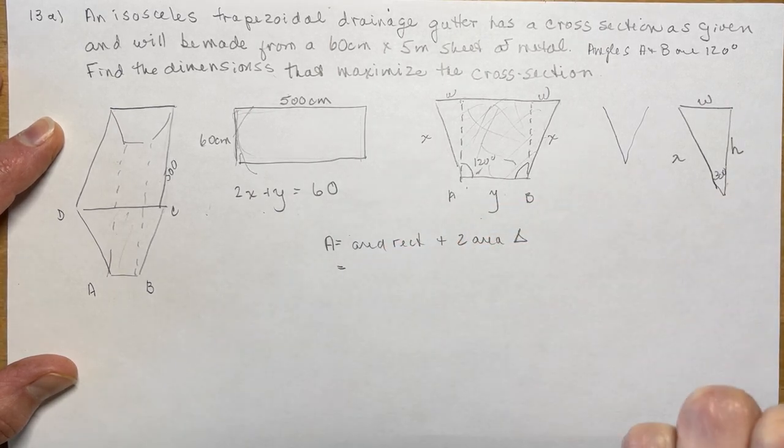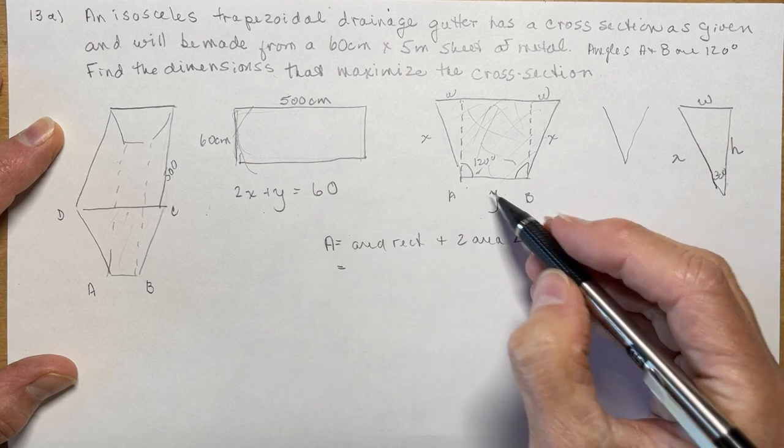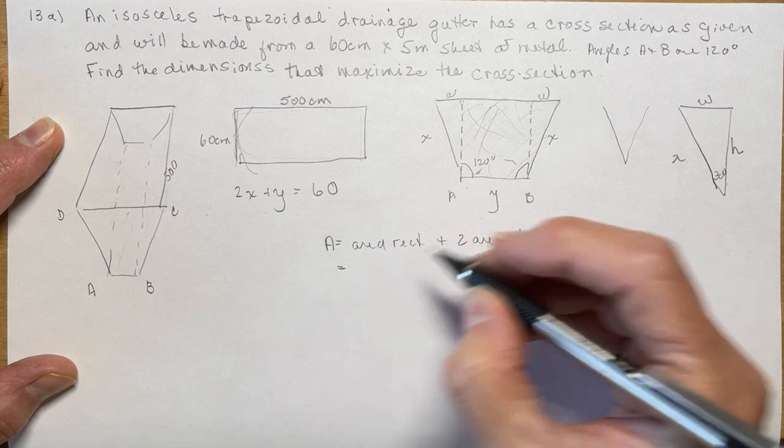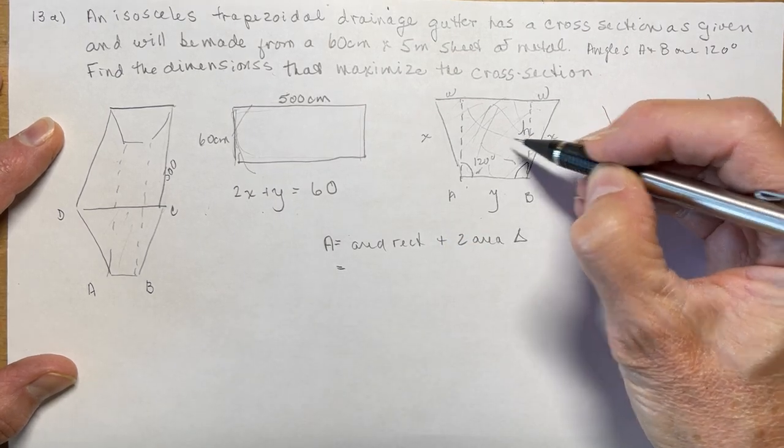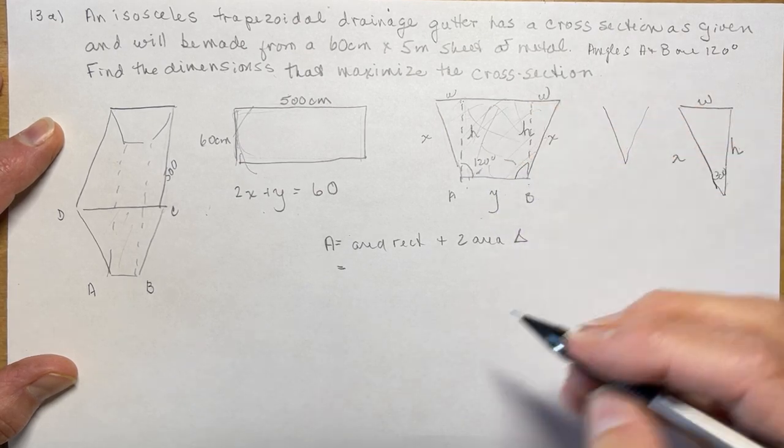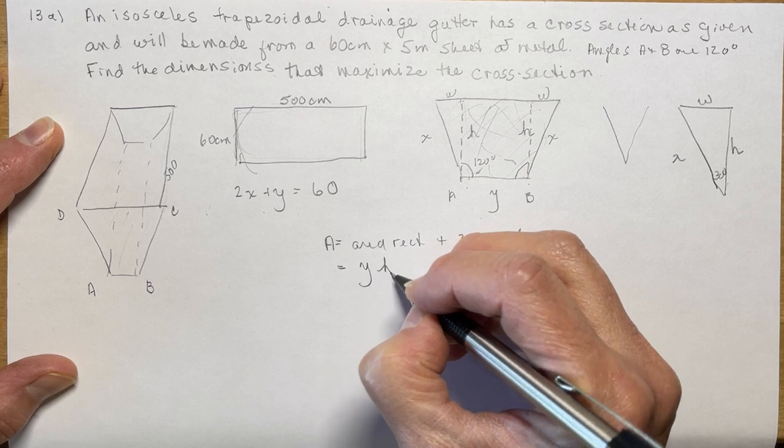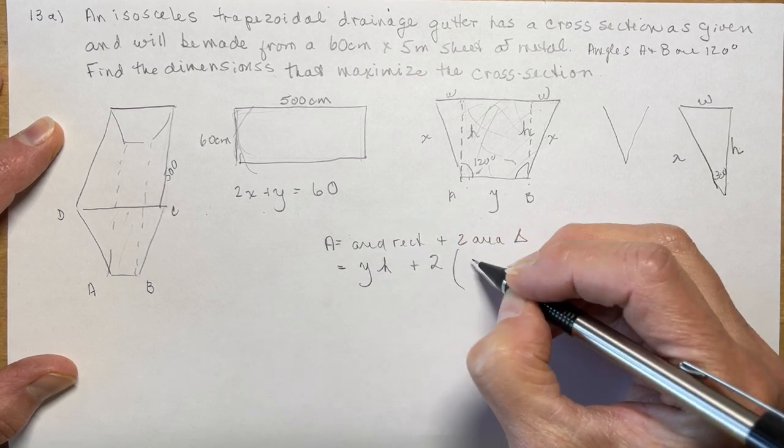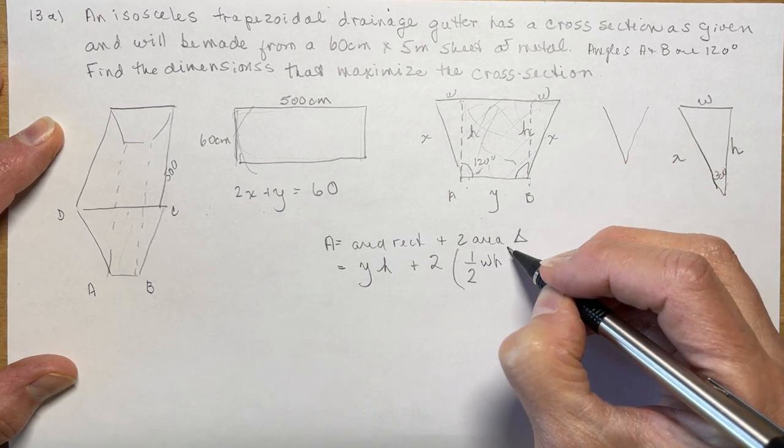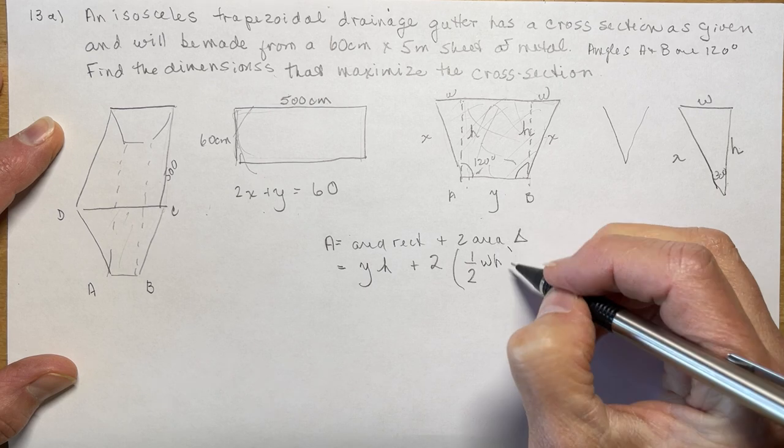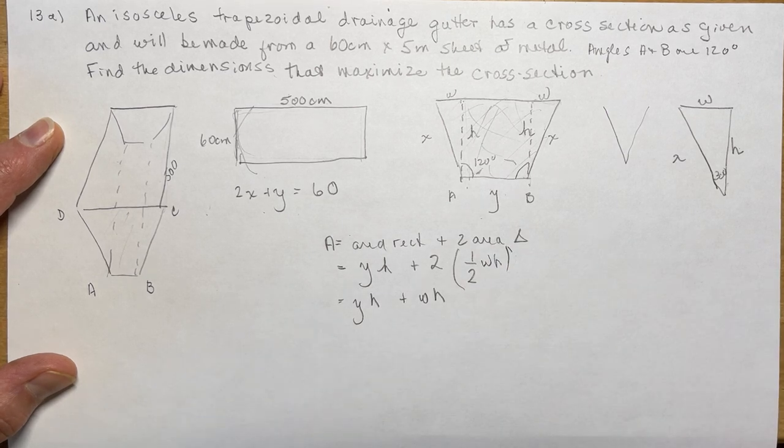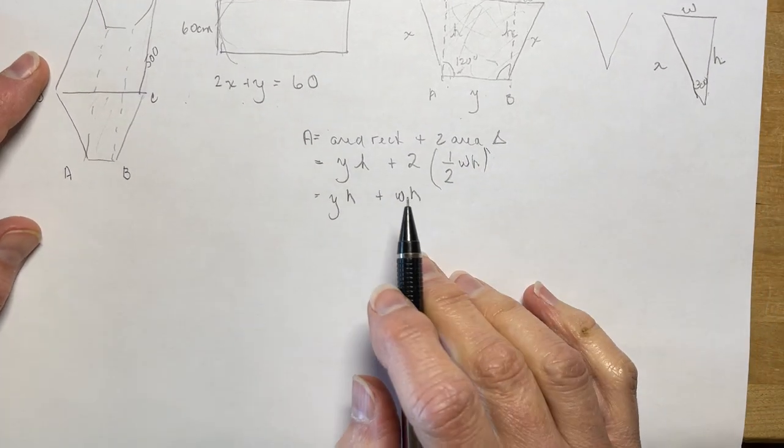So the area of the rectangle here is going to be y times h, so this is going to be yh plus two times one half the base, the base is w, the height is h. So that's going to give me yh plus wh. So that's the area I'm trying to maximize.